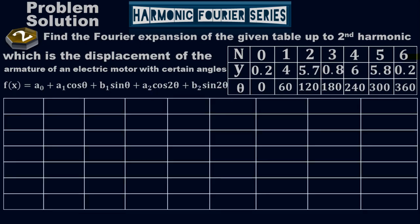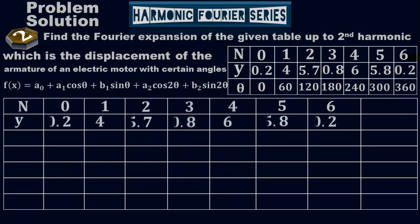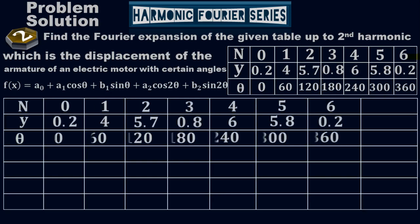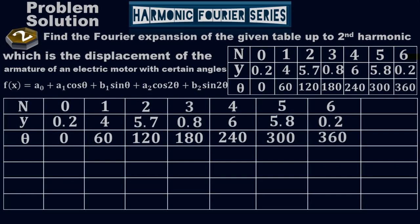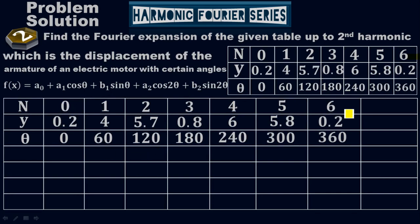This is the given table where these are my n values, these are my y values, and these are my theta values. The number of points are seven — count from zero up to six, there are seven points. Don't skip the zero; count it from zero.